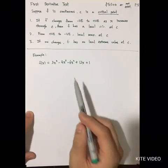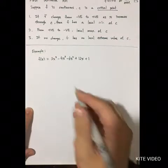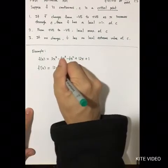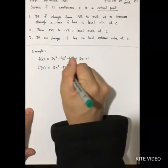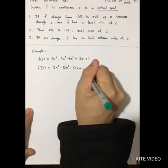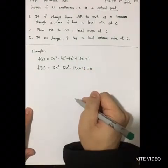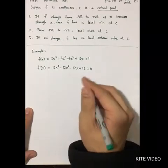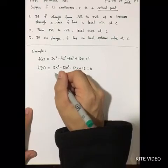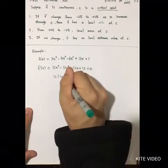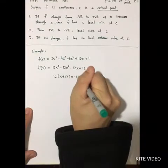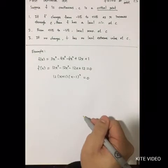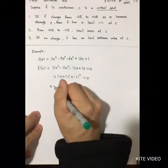For example, given a function, to find the maximum or minimum using first order conditions, you differentiate with respect to x once. This gives 12x³ minus 12x² minus 12x plus 12 equal to zero. You set it equal to zero to find all critical points, then simplify it as 12 times (x + 1) times (x − 1) squared.